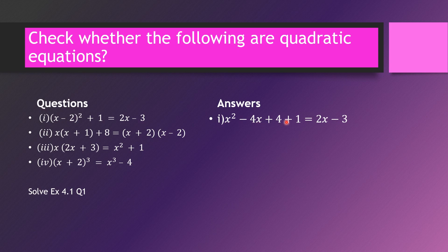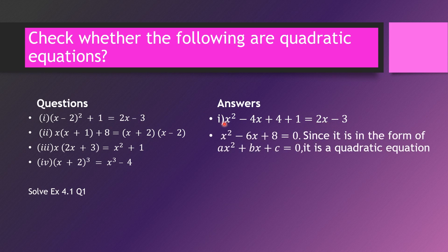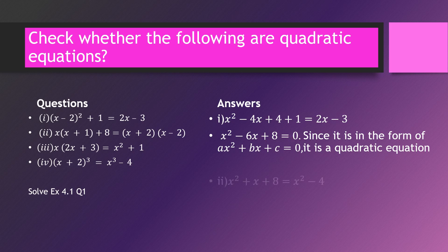For the first example: (x minus 2) squared plus 1 equals 2x minus 3. Expanding gives x squared minus 4x plus 4 plus 1 equals 2x minus 3, which simplifies to x squared minus 6x plus 8 equals 0. The highest power is 2 and it is in the form ax squared plus bx plus c equals 0, therefore it is a quadratic equation.